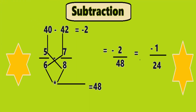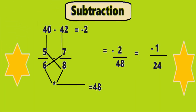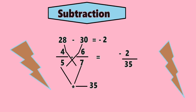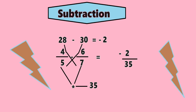Now second example: 4 by 5 minus 6 by 7. Cross multiply: 4 into 7 which is equal to 28, 5 into 6 which is equal to 30. Now subtract 28 minus 30, which will give us minus 2, and that becomes the numerator. Now multiply the denominator: 5 into 7 which will give us 35, and that becomes the denominator. So the answer is minus 2 divided by 35.